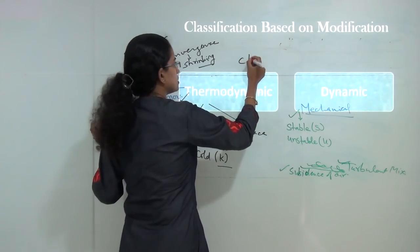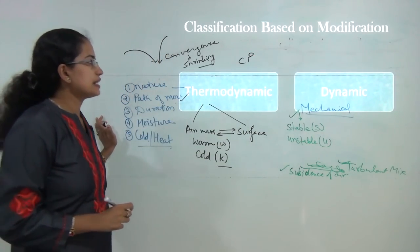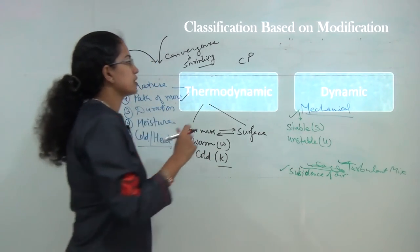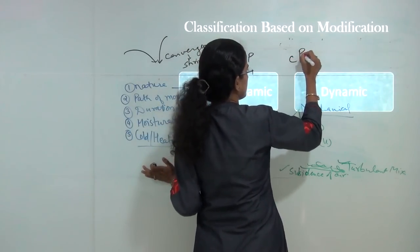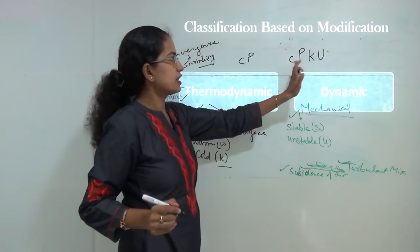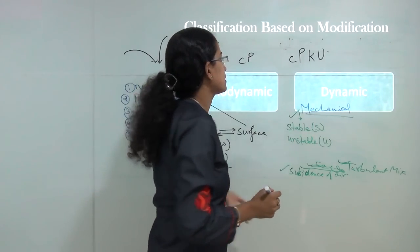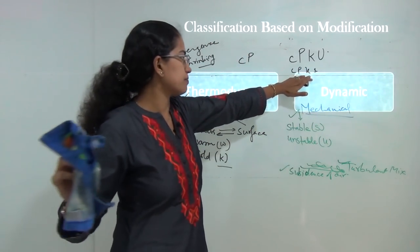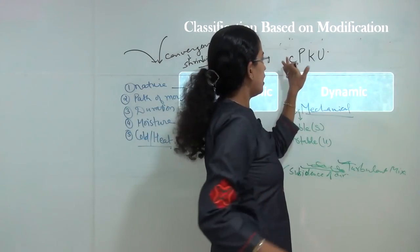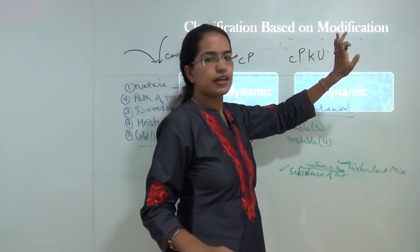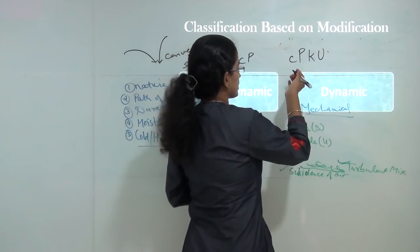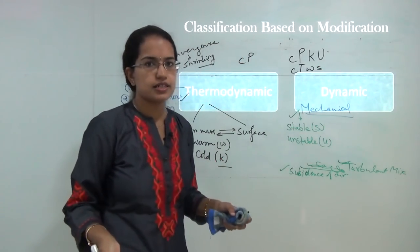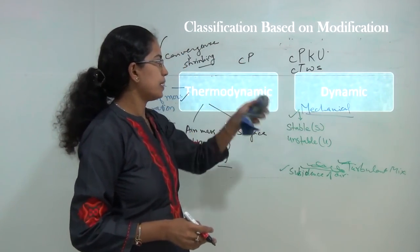As an example, CP stands for continental polar. Within continental polar there can be various kinds of air masses. CPKU denotes continental polar which is cold and unstable. Continental polar which is stable might also exist, though usually continental polar regions are denoted by U for unstable. Another notation example would be continental tropical that is warm and stable.